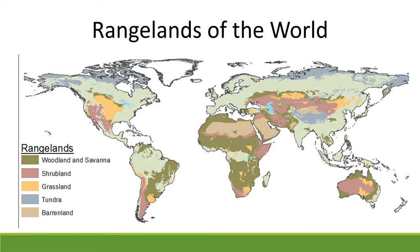Putting all these things together and looking at rangelands of the world, the woodlands and savannas — the greener areas — are some of the more moist rangeland types found along tropical areas of the globe. Grasslands are in the centers of continents where it's drier due to orographic effects and the continental effect. The driest parts — shrublands and barrenlands in purplish and brown colors — are right along that Hadley cell at the 30-degree latitude area. We see those in Australia, in northern Africa, and in southern South America.